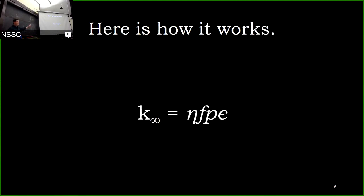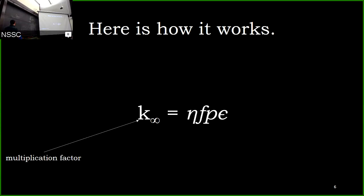Now the most technical slide in the presentation: K-infinity, or the multiplication factor. Think of it as a variable that essentially says: I have X neutrons coming into this lifetime and I have Y neutrons coming out on the other side. When K-infinity equals one in this idealized system, you have a critical reactor. What that means is what you put in, you get out - Y equals X. And on the other side, if it's still critical, you keep getting Y back out. So it's self-sustaining. That's what a critical reactor is.